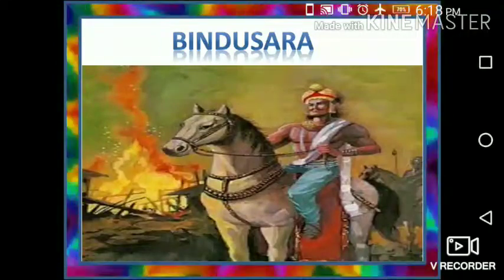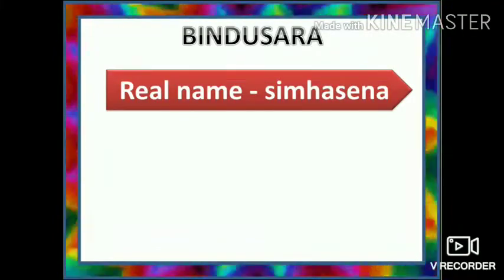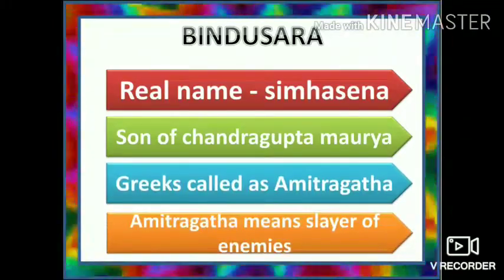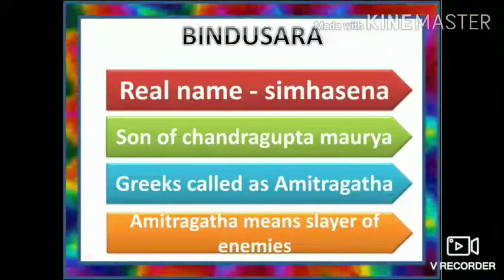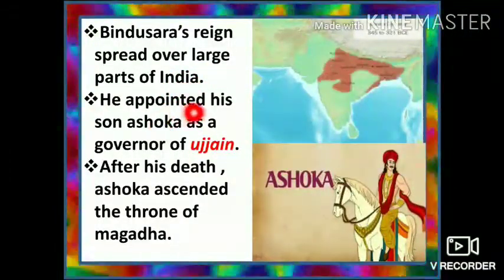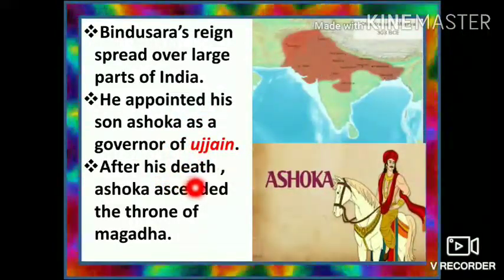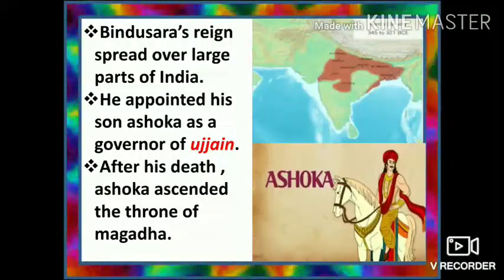Now let's see about Bindusara. Bindusara was the second Mauryan emperor. He was the son of Chandragupta Maurya and the father of Ashoka. His real name was Simhasena. The Greeks called him Amitraghata, meaning slayer of enemies. Bindusara's region spread over large parts of India. He appointed his son Ashoka as governor of Ujjain. After his death, Ashoka ascended the throne of Magadha. Bindusara is believed to have extended the Mauryan empire to Mysore.